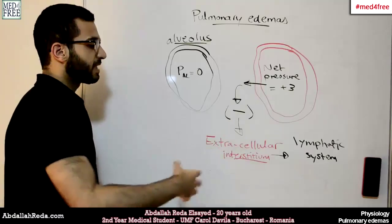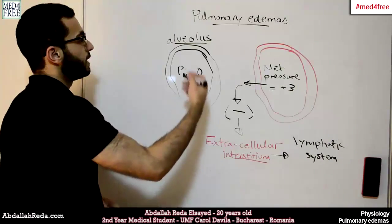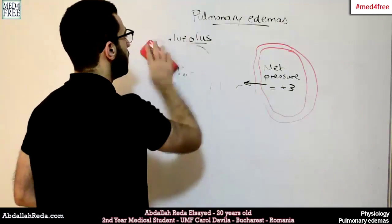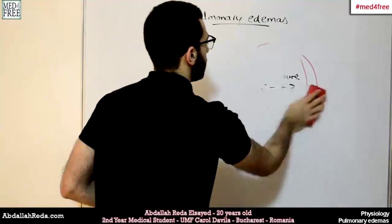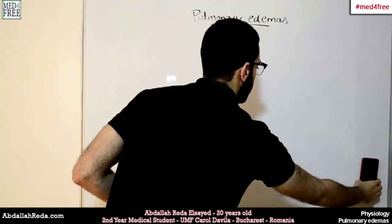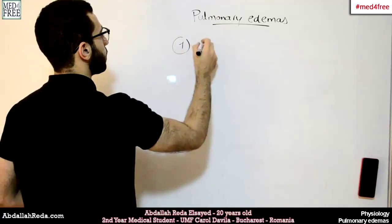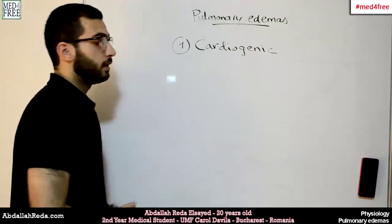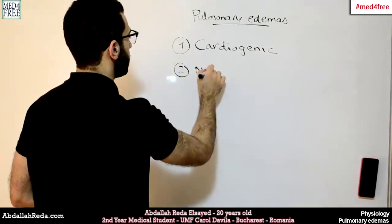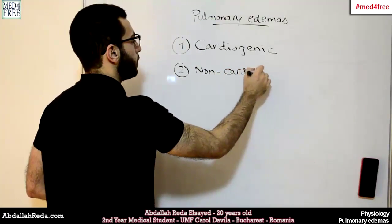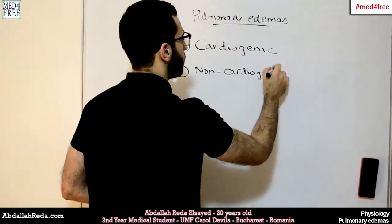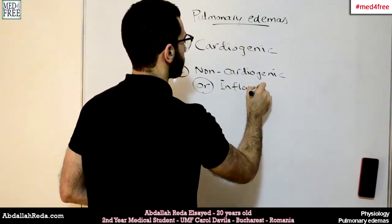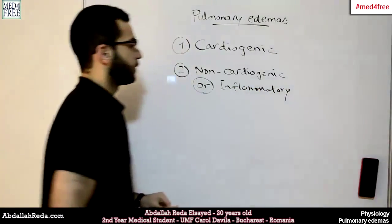Now, what if something goes wrong? How does pulmonary edema happen? Well, we have two types of pulmonary edemas. The first type is called a cardiogenic edema, and the other one is a non-cardiogenic or inflammatory pulmonary edema.